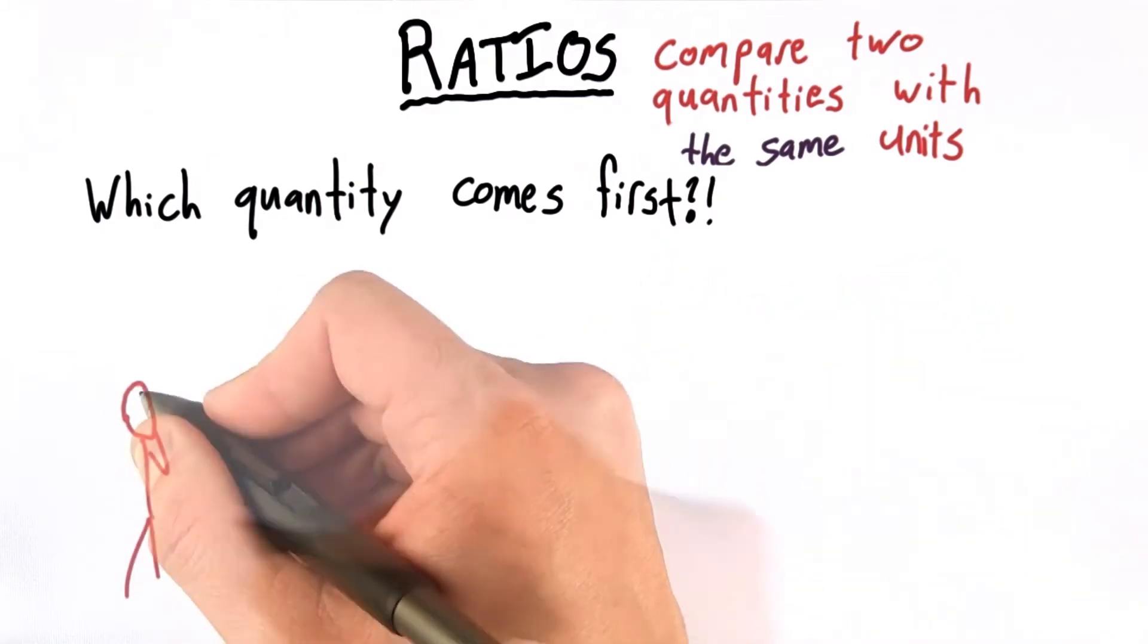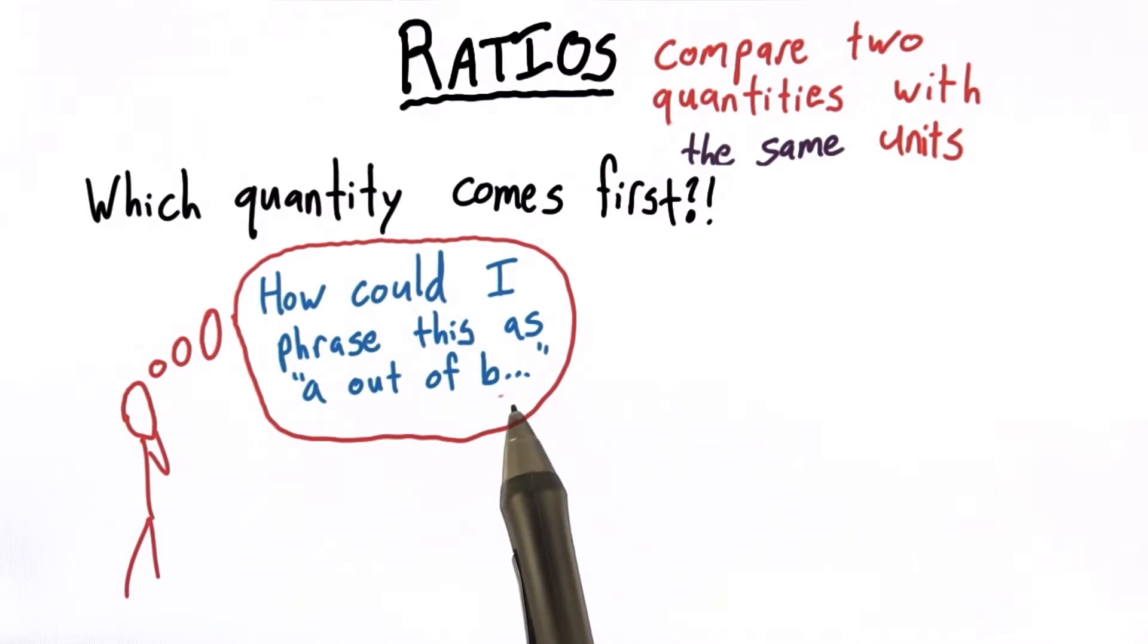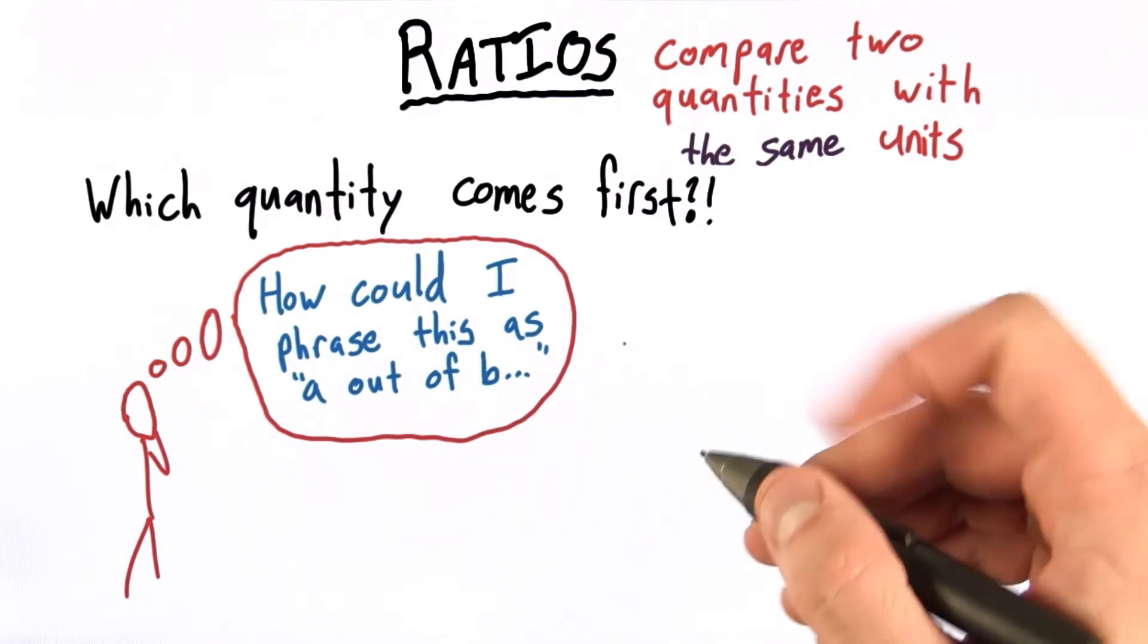To answer this question, I like to think to myself, how could I phrase this as A out of B something? And let me explain what I mean.